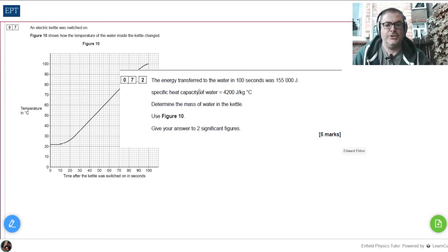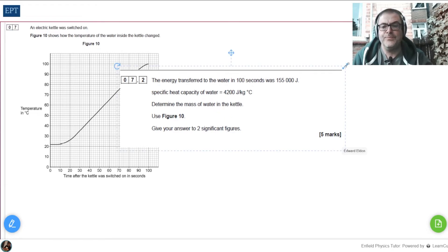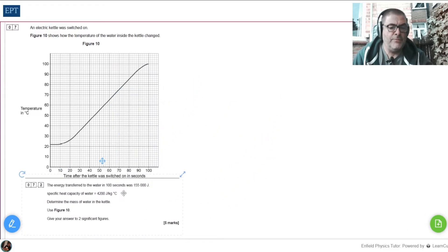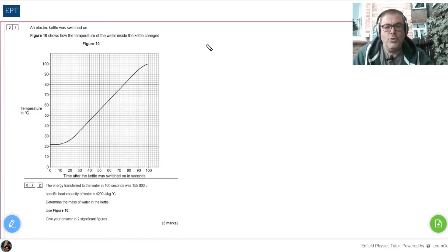Next part of the question tells us that the energy transferred to the water in 100 seconds is 15,500 joules. It gives us a figure for the specific heat capacity and asks us to find the mass of water in the kettle. So let's shrink that down a little bit, give myself a bit more space to write. You will recall, no doubt, that ΔE equals mcΔθ. ΔE being the thermal energy that's gone into the water, the useful energy if you like, and we're given that it's 15,500. Mass is what we've got to find, and we've got C as 4,200.